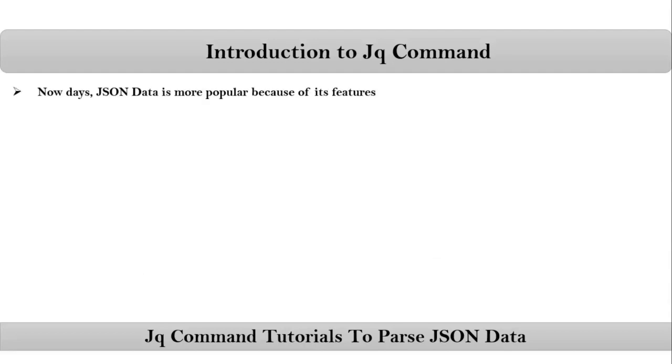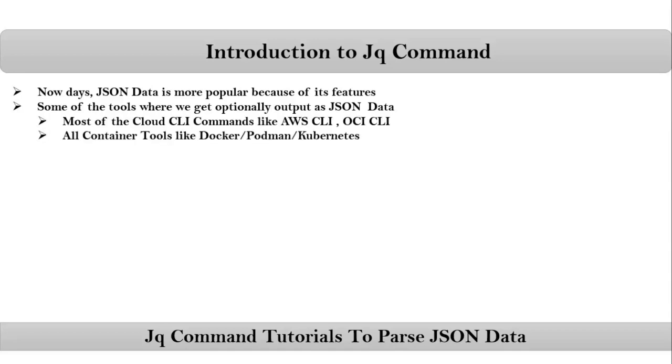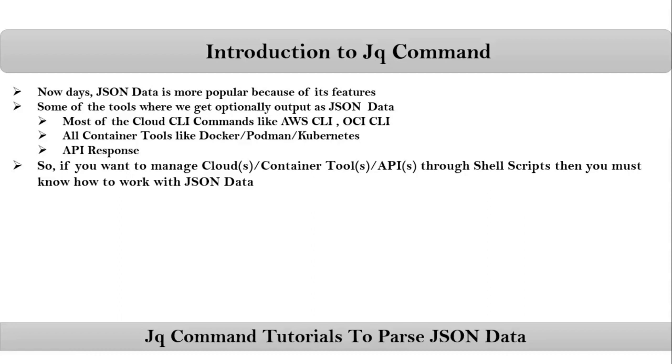Nowadays JSON data is more popular because of its features. Some of the tools that optionally output JSON data are most cloud CLI commands, all container tools, and API responses. So if you want to manage your cloud, container tools, or APIs through shell scripts, then you must know how to work with JSON data — and that is where we need the jq command. jq is a command line tool to parse JSON data on Unix or Linux.